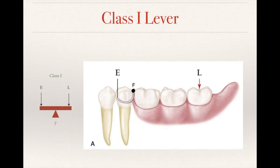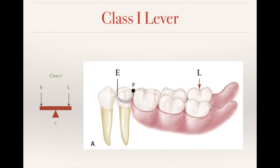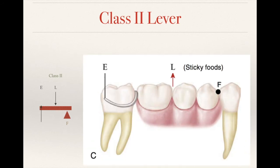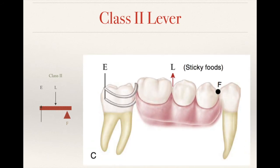For example, with a distal extension removable partial denture, when we chew food, the posterior part of the RPD moves down — this is considered a class 1 lever. If a removable partial denture is between teeth with anterior-posterior rests, when you chew sticky food and the denture tries to dislodge, this is considered a class 2 lever.